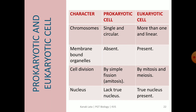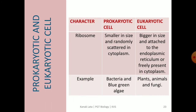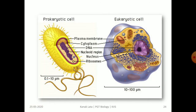In prokaryotes, the nucleus lacks a true nucleus, whereas in eukaryotes it has a true nucleus. Regarding ribosomes, in prokaryotes they are smaller in size and randomly scattered in the cytoplasm, whereas in eukaryotes they are bigger in size and attached to the endoplasmic reticulum or freely present in the cytoplasm. Examples of prokaryotes are bacteria and blue-green algae, whereas examples of eukaryotes are plants, animals, and fungi. This figure shows prokaryotic and eukaryotic cells.